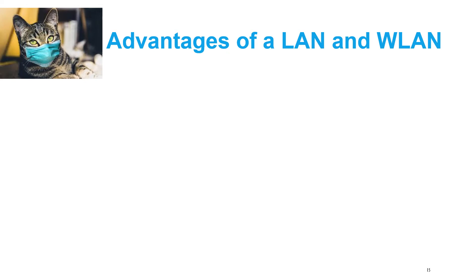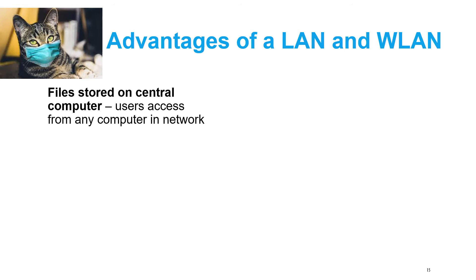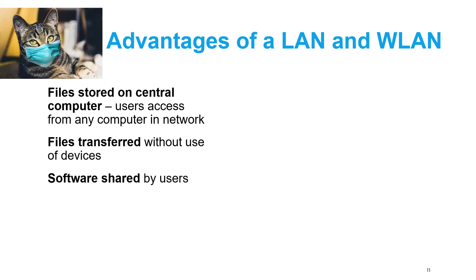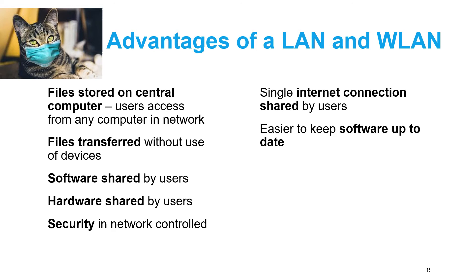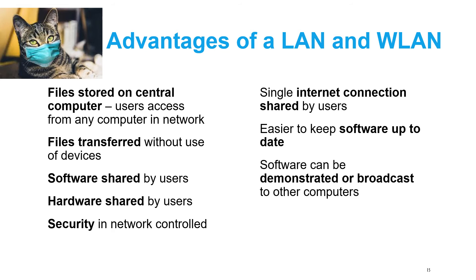The advantages of a LAN and wireless LAN include: you can store files on a central computer and all users can access them; you can transfer files without using a flash drive; you can share software and hardware such as a printer; you can control security; you can share one internet connection across all users; it's easier to keep software up to date from one central place; software can be broadcast to other computers; and you can monitor internet usage through an internet server to prevent abuse.